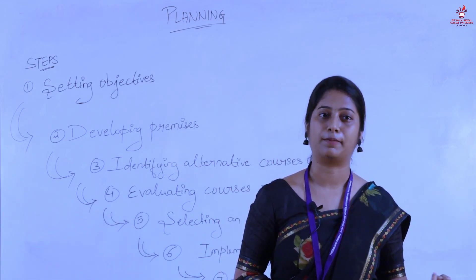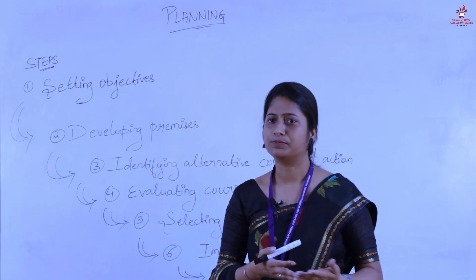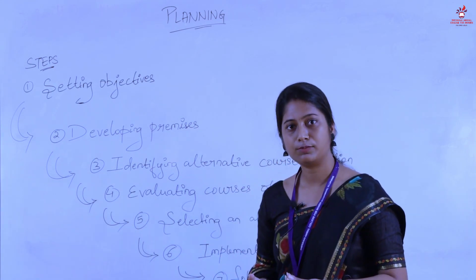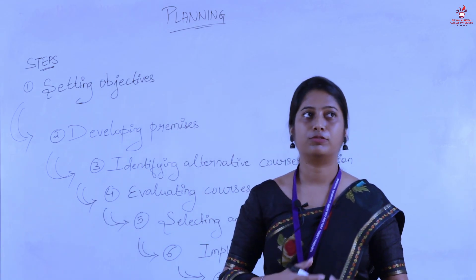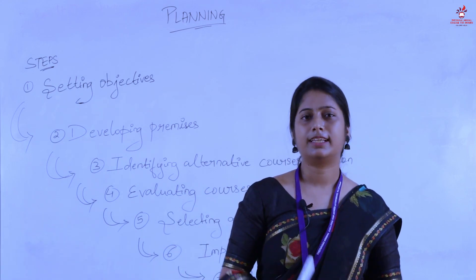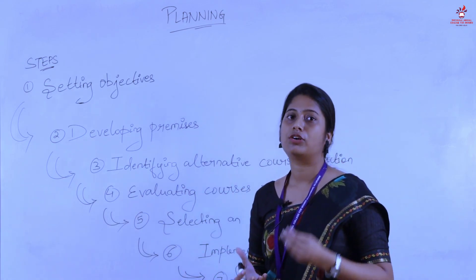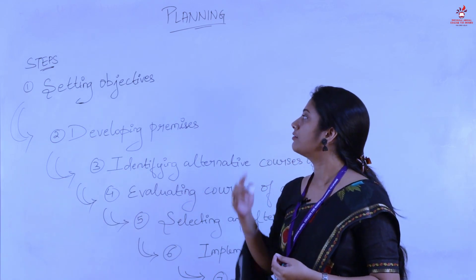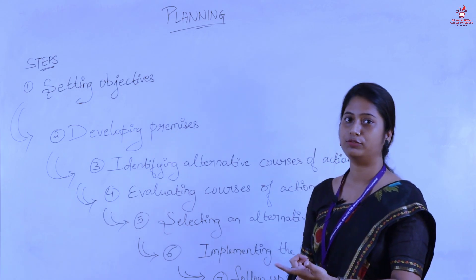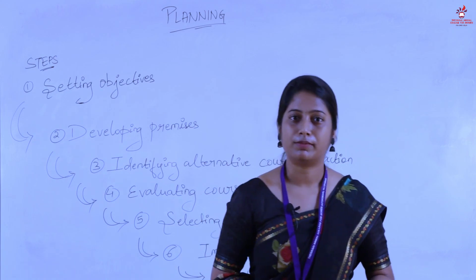The first step of planning is called setting up of objectives. Continuing the previous example, throwing a party was the primary objective of Ria. Similarly, for organizations it can be anything — increasing sales by 25%, increasing profit by 20%, or decreasing additional costs. Fixing a clear goal for the organization is the first step in planning.